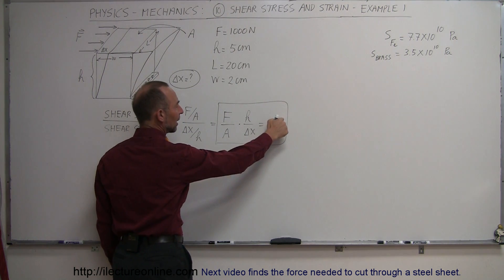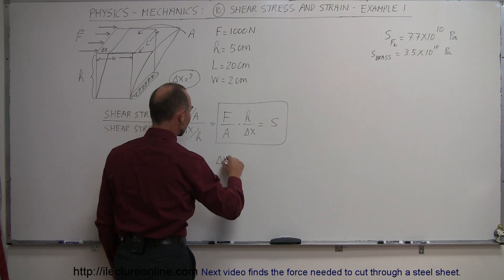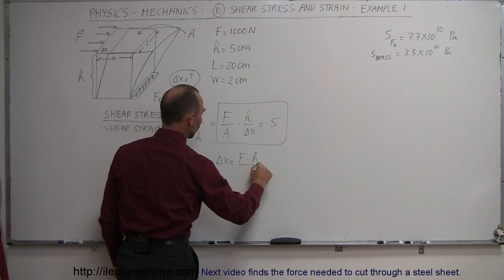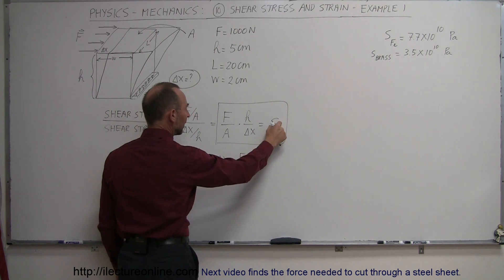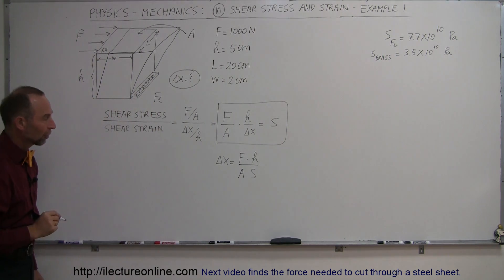Meaning we're going to move delta x over here, and the S down here, and turn the equation around, so we get delta x is equal to F times H over the cross-section area, and then the S comes down here. And so we have solved this equation for delta x.